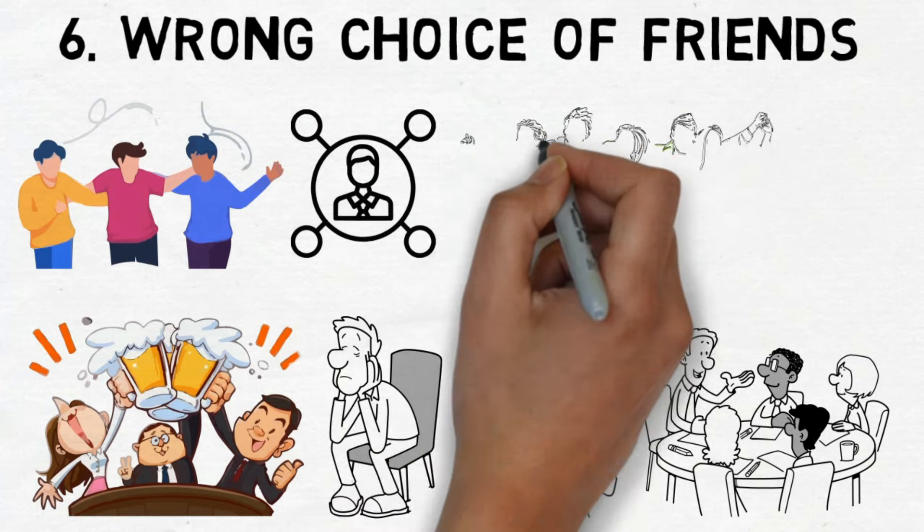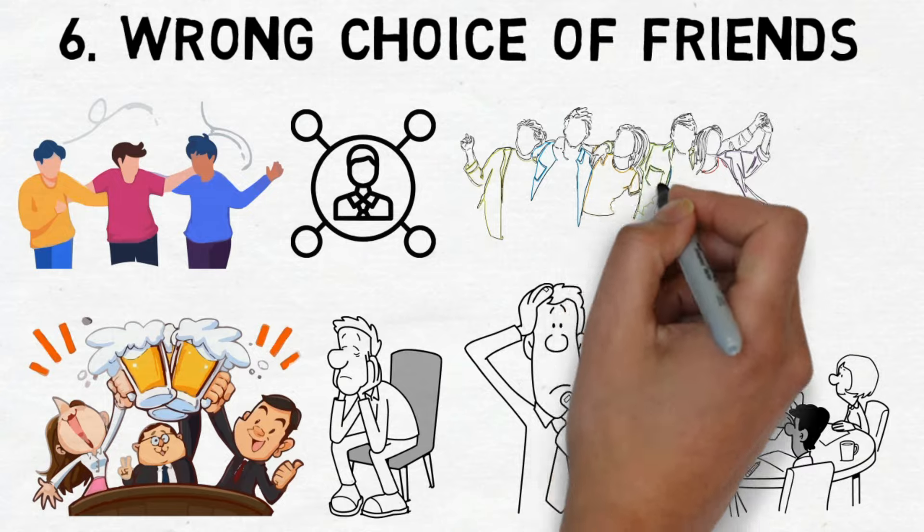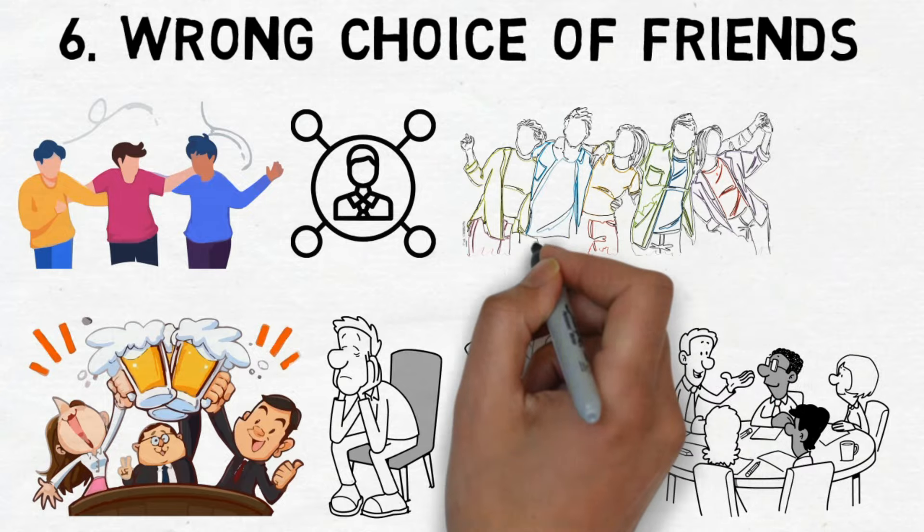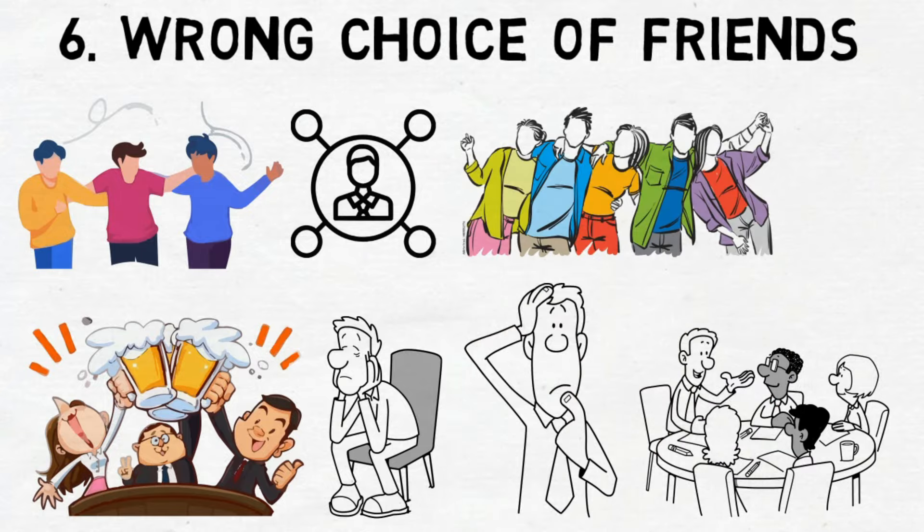It's not always because they don't think you can succeed. Sometimes, they just don't want you to become more successful than them and leave their group of friends. They may fear losing your companionship once you attain wealth.